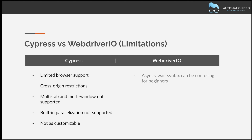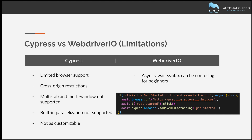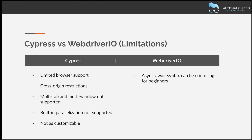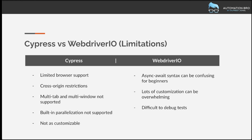Now let's talk about WebDriver.io limitations. The first is the async/await syntax, which can be confusing for beginners. Since WebDriver.io switched from synchronous to asynchronous mode, the async/await syntax can be difficult for those not coming from the JavaScript world. Additionally, while WebDriver.io has a lot of customization options, for beginners all this configuration can be overwhelming. And WebDriver.io is comparatively difficult to debug — with Cypress you can use time travel in the test runner when tests fail, whereas WebDriver.io, while offering multiple debugging options, is not as intuitive.